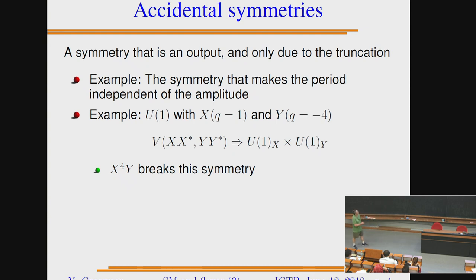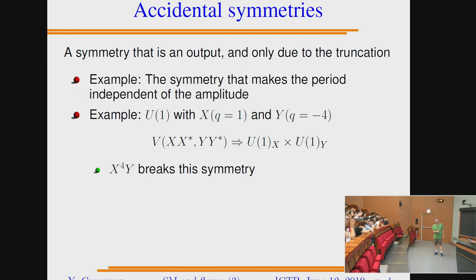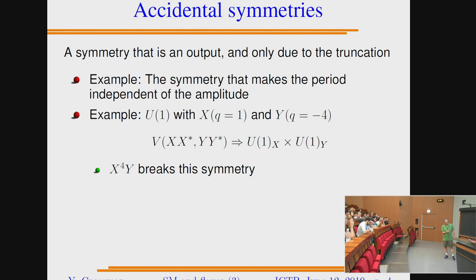Another example: take a U(1) theory with two fields, one with charge +1 and another with charge −4. Up to dimension four, the only terms are XX* and YY*, giving us two symmetries: U(1)_X and U(1)_Y, where X and Y rotate independently. But there's a dimension-five operator X⁴Y that is invariant under the original U(1) — because 4−4=0. Once I include this, X and Y can no longer rotate independently. So the accidental U(1)_X × U(1)_Y symmetry is broken by the dimension-five operator.